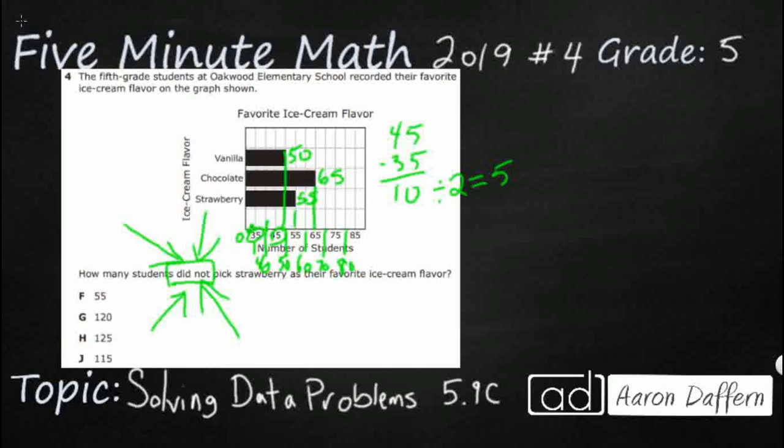Because how many students did not pick strawberry? Well, if all you're doing is looking at strawberry, and you look up there, you're like, okay, strawberry, that's 55. All right. Well, strawberry, look at that. There's 55. Wrong answer. Because that's how many students picked strawberry. We're looking for how many students did not pick strawberry. That's the trick here.